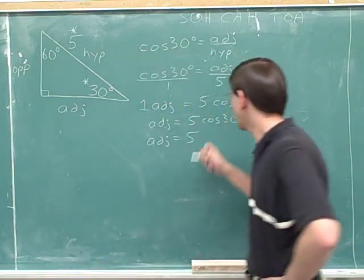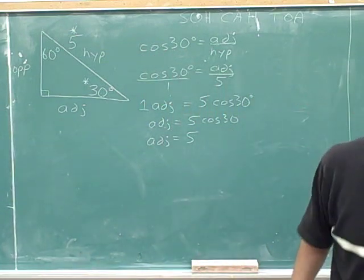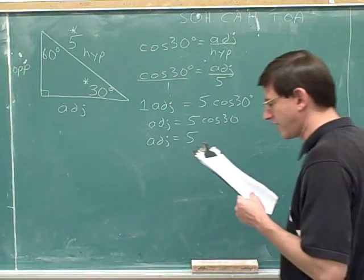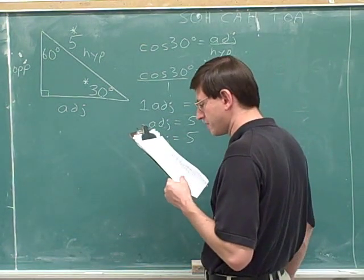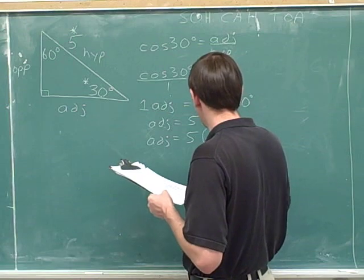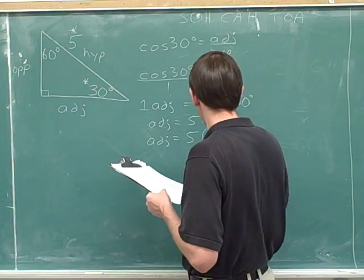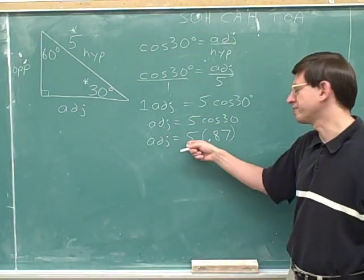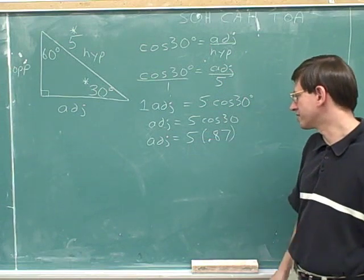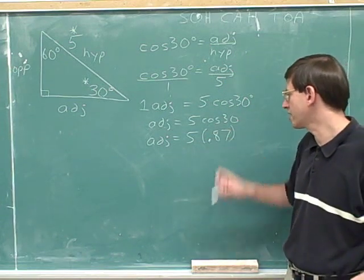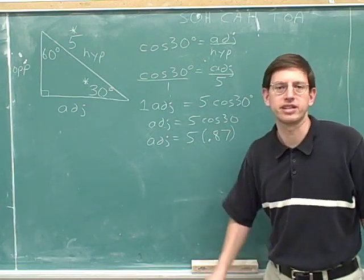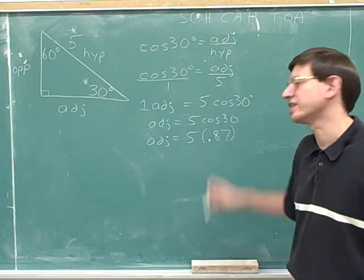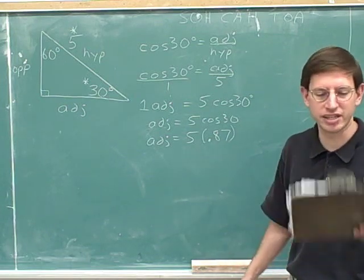We can use our calculator to find the cosine of 30. On your calculator, the cosine of 30 is 0.87. That has to be multiplied by 5 still, so I'll put that in parentheses to indicate the multiplication. I hope you have your calculator with you and have typed in the cosine of 30 and gotten 0.87.